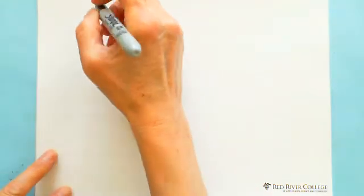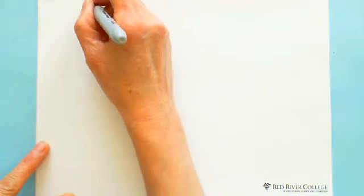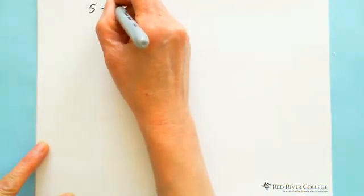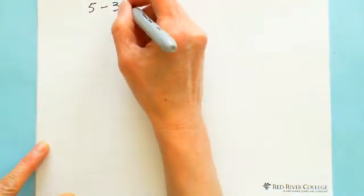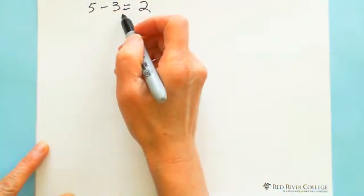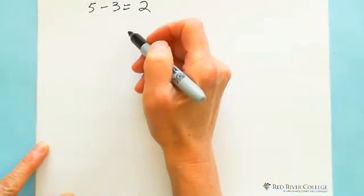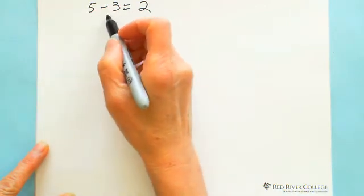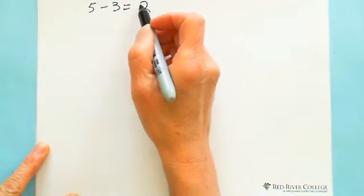Let me show you what subtraction means. Subtraction means find the difference of two numbers. For example, when a number is 5, 5 minus 3 equals 2. So the difference between 5 and 3 is 2, because 5 is greater than 3, so the answer is positive.